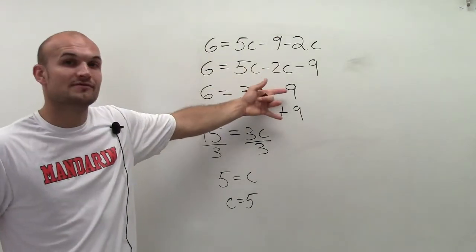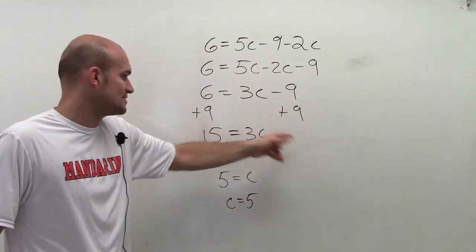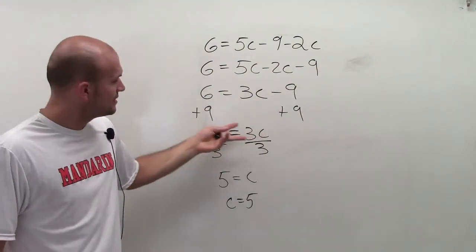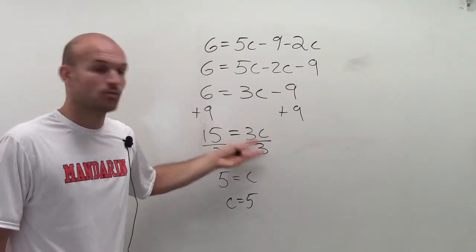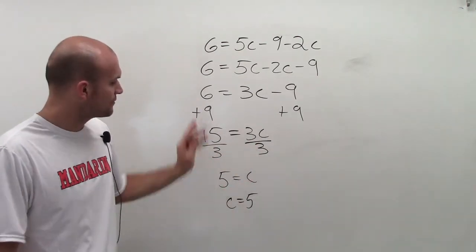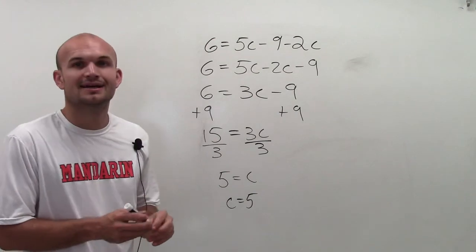And remember, when I have my inverse operations, that goes to 0. 0 plus 3c is 3c. 3 divided by 3 is 1. 1 times c is just c. Rewrite it so the value of c is equal to 5.